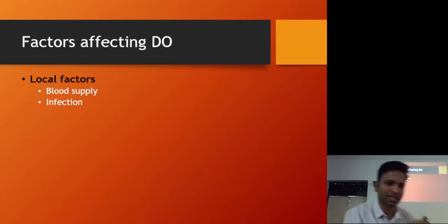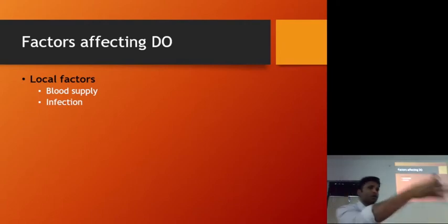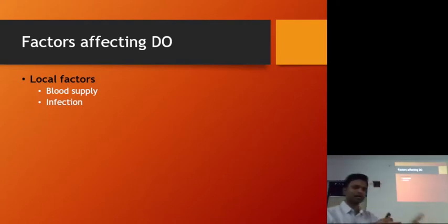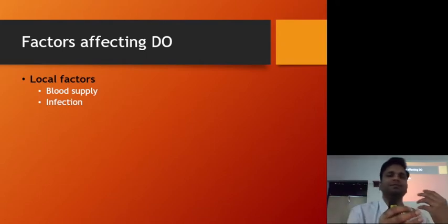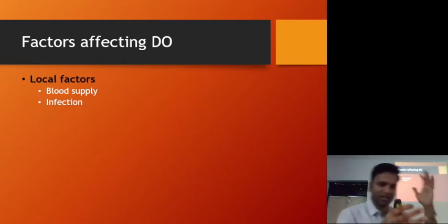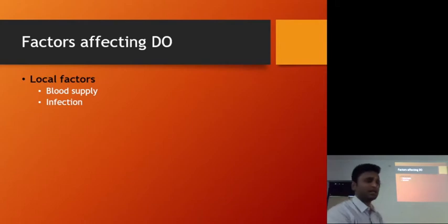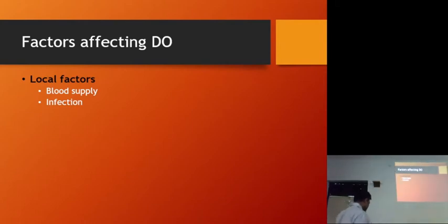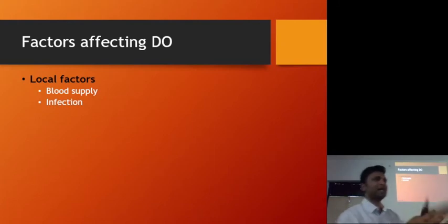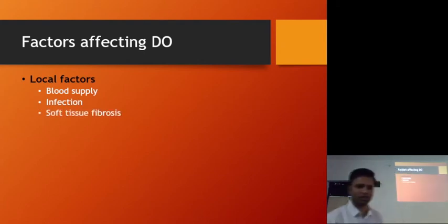Infection is another local factor. If there is infection of the osteotomy site — for example, osteomyelitis — we're not going to perform distraction osteogenesis until we have managed the infection. It can also be a space infection. We need to make sure the infection is controlled first and we have healthy bone at the site before continuing with distraction osteogenesis.